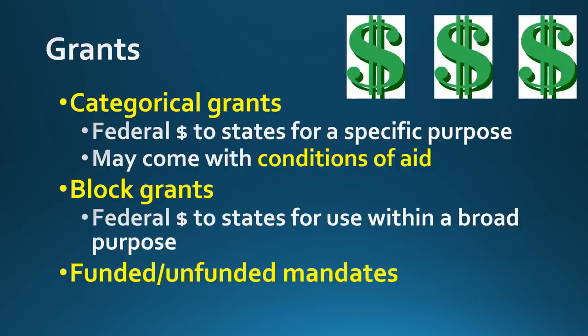There has been a tremendous increase in grants from the federal government to the states. When you see the word grant, think of money. Categorical grants are money from the federal government given to states with a specific purpose, and sometimes that money comes with a condition of aid. For example, in the 1980s, the Reagan administration told states that if you want to keep getting money for transportation, you need to raise your drinking age. Block grants are federal money that states prefer because they have a more broad purpose, so states have more freedom in how they use that money.